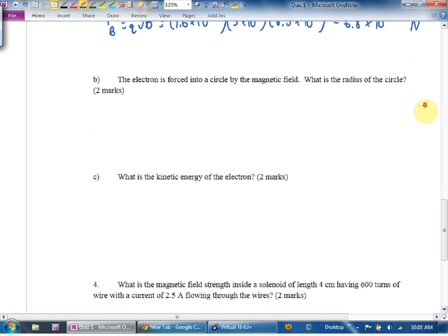Part B: the electron is forced into a circle. Magnetic force equals circular force. qvB equals mv squared over r. One v cancels. What do they want me to find here?